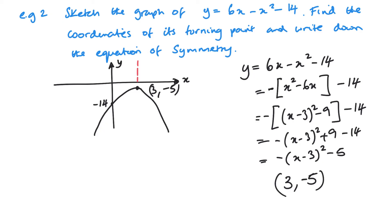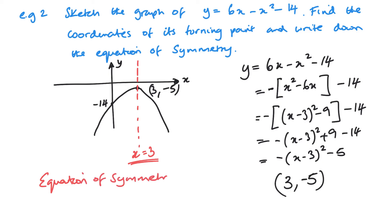Now we just need the line of symmetry, which passes through the turning point. The turning point is at x = 3, so the equation of the line of symmetry is x = 3. And that's it done.